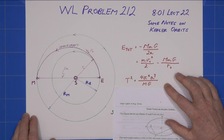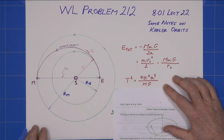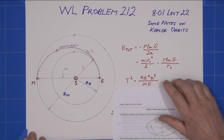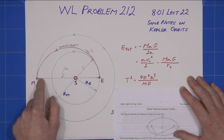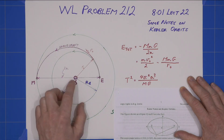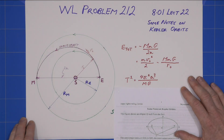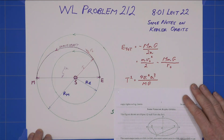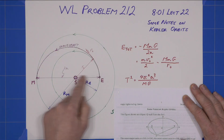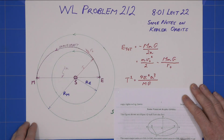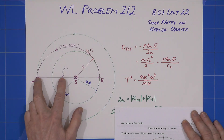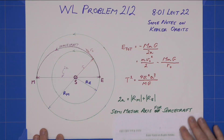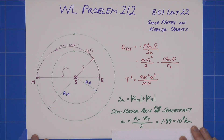Also, the orbital period is given by this expression, where 'a' in each case is the semi-major axis of the ellipse — in the case of a circle, 'a' is simply the radius. For our spacecraft, the semi-major axis is crucial: it is (r_Earth + r_Mars) divided by 2, the average of the two orbital radii.